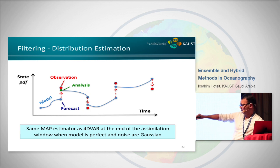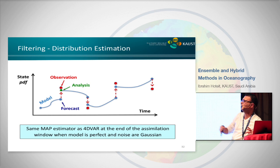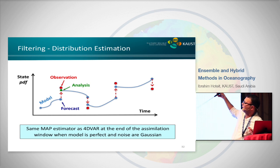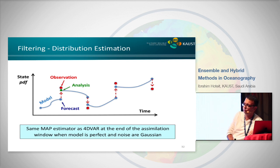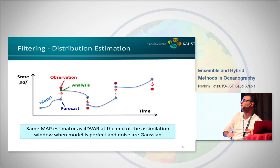At the end of the assimilation window, if I implement this perfectly and solve Bayes exactly, I should get the same exact solution as 4D var at the end of the assimilation window — if the model is perfect and I used all available information.